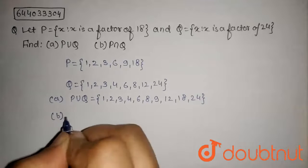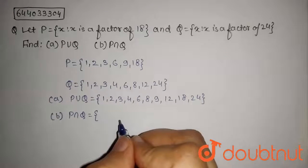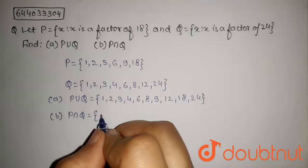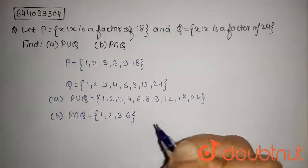Now we have to find B, P intersection Q. So P intersection Q will contain elements which are in P and as well as in Q. So this set will contain 1, 2, 3 and 6.